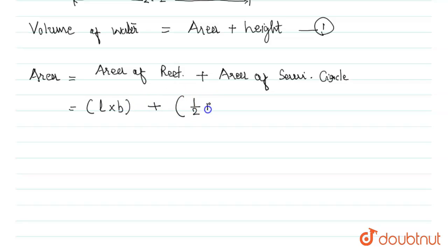Now if we put the values, that is equal to 7 times 2.1 meters plus one half pi, that is 22 by 7, times r which is 7 by 2 squared.